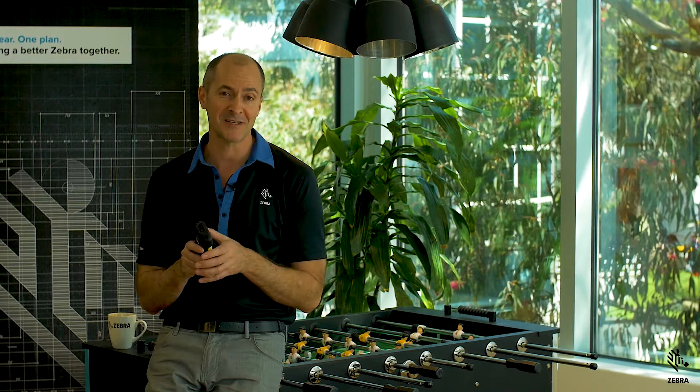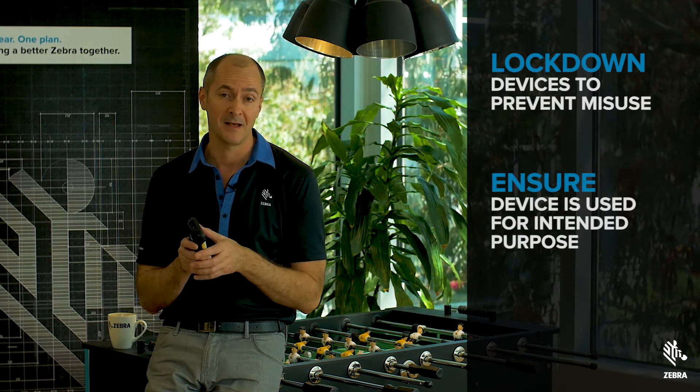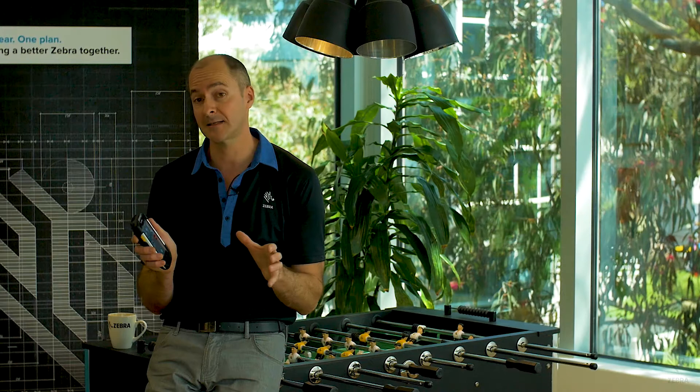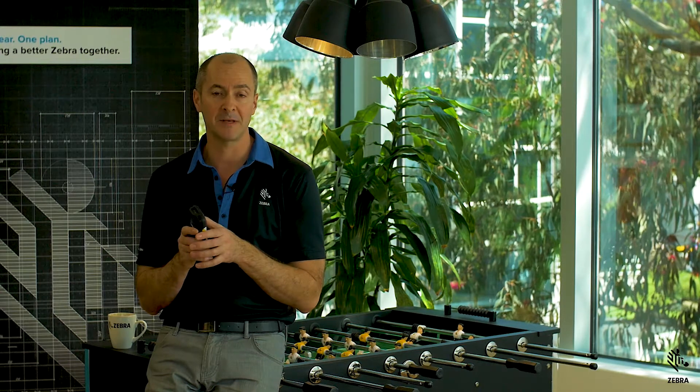Enterprise Home Screen addresses these issues by enabling administrators to lock down the device interface so that devices are only used for their intended purpose. This restricts users from accessing settings that could prevent the device from performing optimally, and prevents workers from installing or accessing non-essential applications. By locking down devices, administrators mitigate the risk of devices failing in the field, and the longer devices are in production the higher your return on investment.